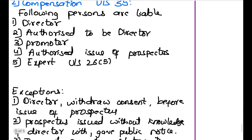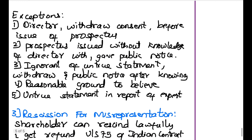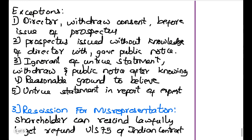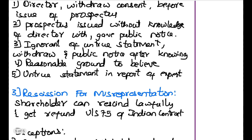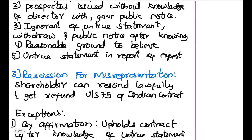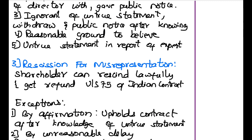Exceptions to section 35 — when persons are not held liable. First, a director who withdraws his consent before the issue of the prospectus is not held liable. Second, if a prospectus is issued without the knowledge of the director, and when it comes to his knowledge he withdraws consent and gives public notice, he is not liable. Third, if the director was ignorant of an untrue statement and withdraws with public notice after knowing, he is not liable. Fourth, if the director had reasonable grounds to believe that the statement was true, he is not held liable. Fifth, if the untrue statement was in a report of an expert and the directors relied on it, they are not held liable.